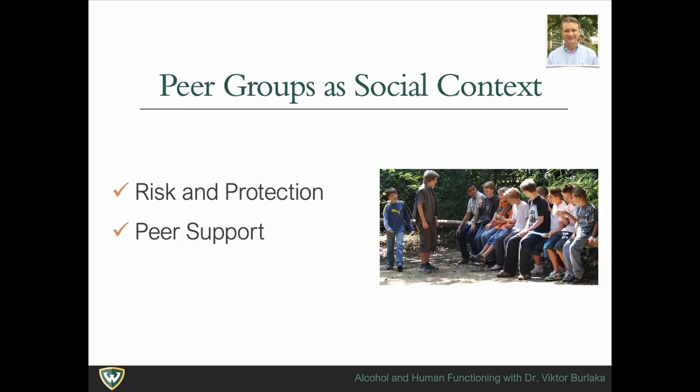Just like the family, one's peer group provides a context for learning through behavioral reinforcements and punishments. In peer groups, individuals learn from others through social learning, observation, and modeling. They learn about substances, how to use them, and where to get them. Peer groups often define what is normal and what is not.